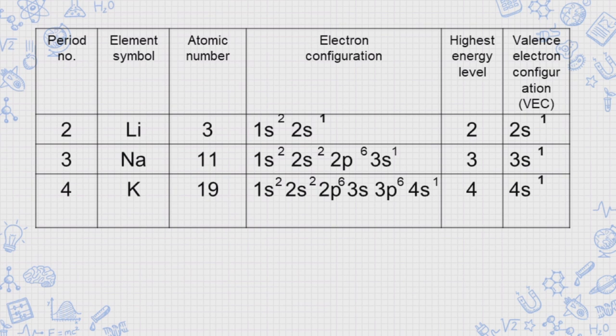By simply writing the electron configuration of an element and knowing its highest energy level, we can determine the period number of a particular element.